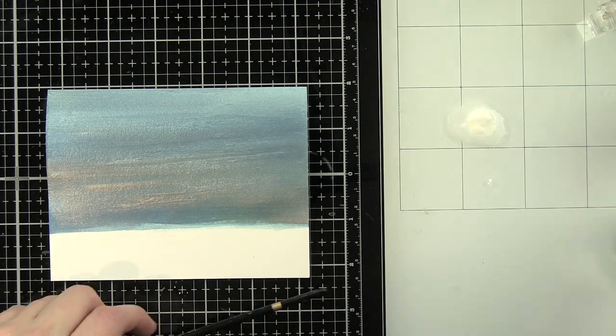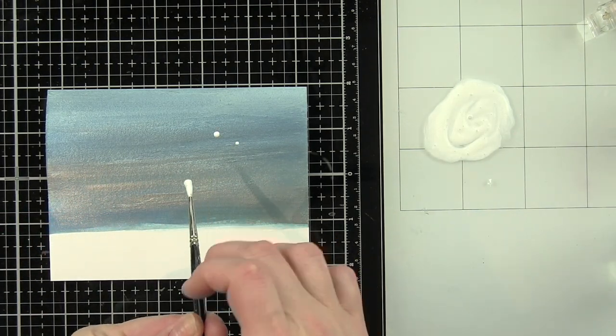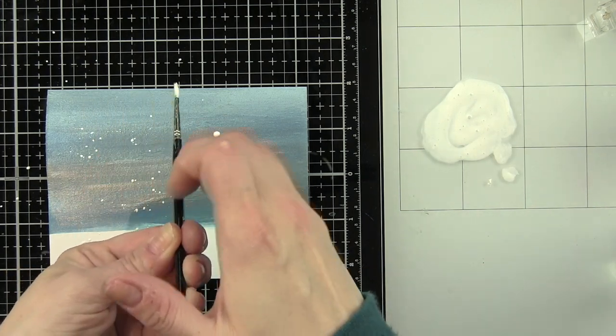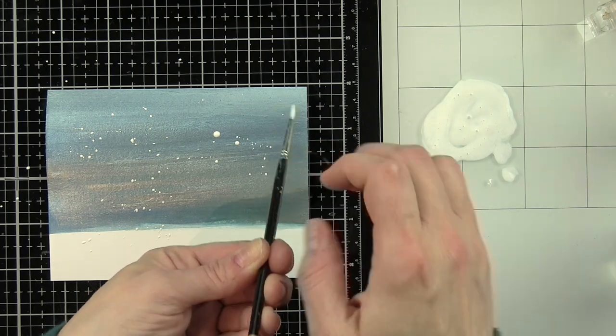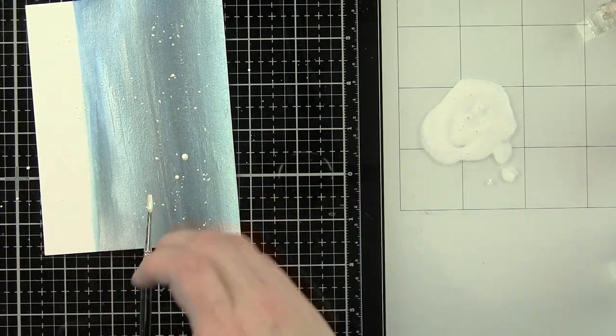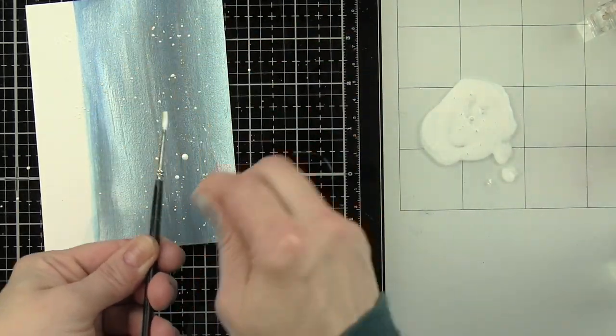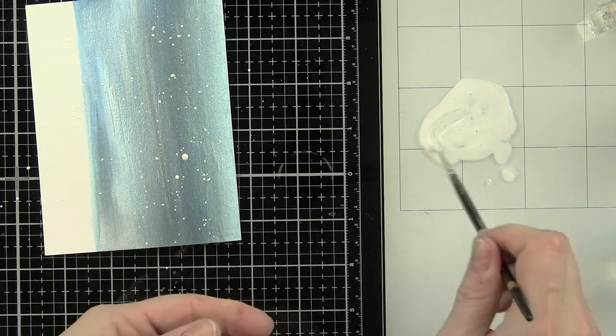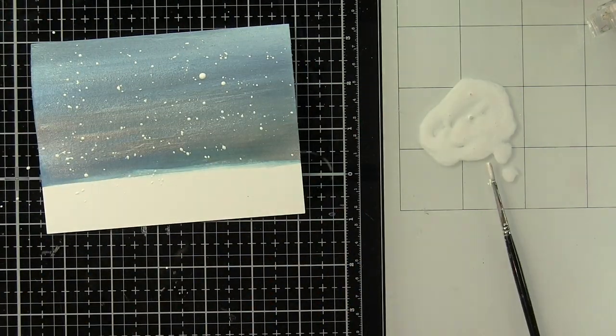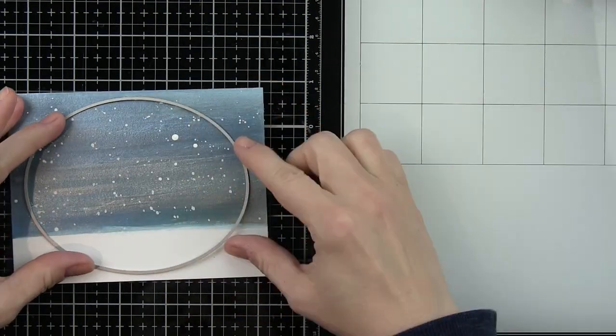I'm going to take some Picket Fence white distress paint, water it down, and then kind of splatter it all over our glimmer and liquid watercolor inked background with a small paint brush. This is going to give the illusion of a snowy background. Again, this is going to need to sit and completely air dry. It will dry pretty quickly, but you want to definitely make sure it's all the way dry before you move on to the next step.